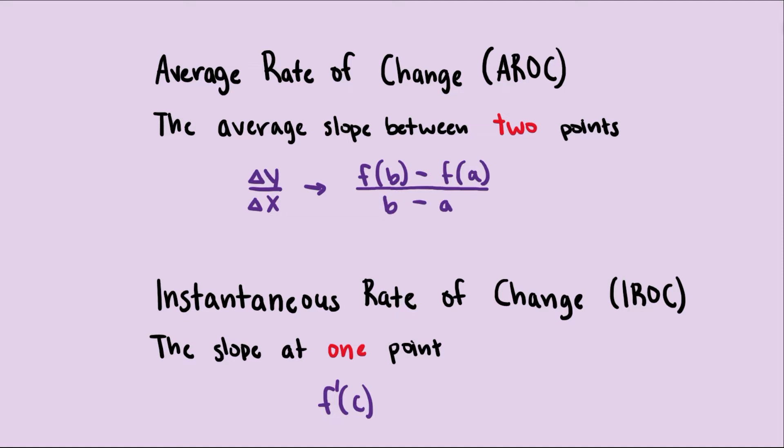The average rate of change is just another way of saying find the slope between two points. The average slope between two points is change in y over change in x, which we can rewrite as f(b) minus f(a) over b minus a. Keep in mind that in order to find the average rate of change, the slope between must be continuous.